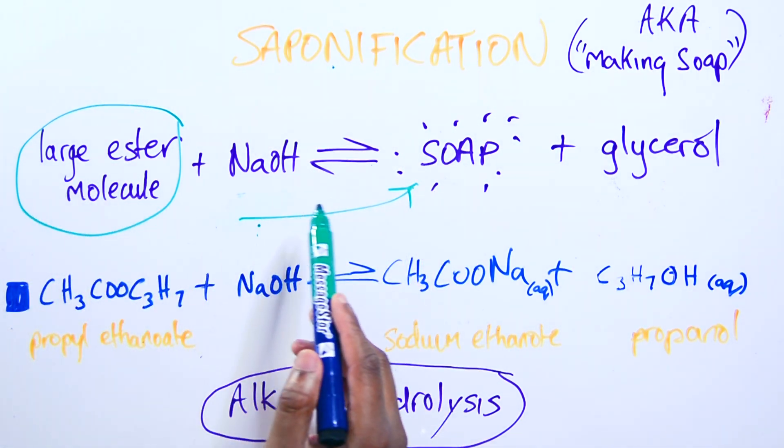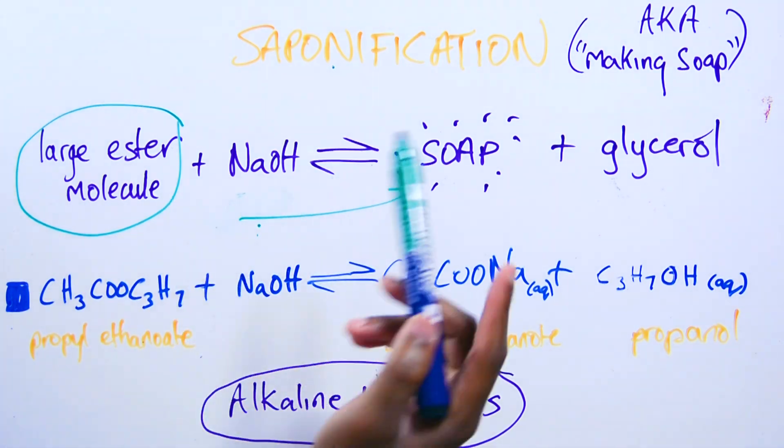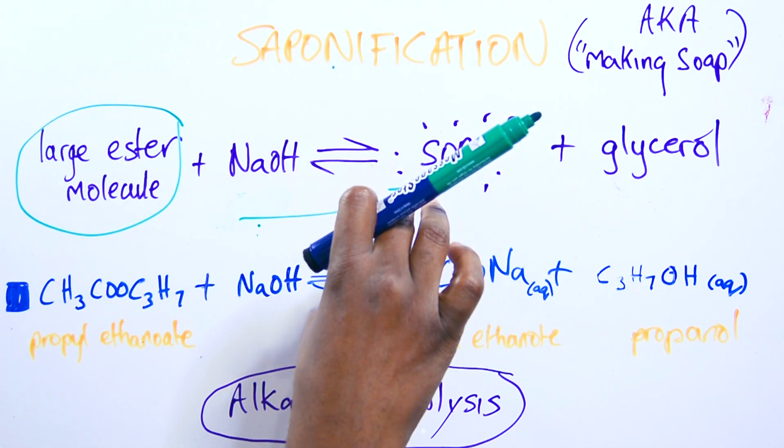So we're going to get a salt of the acid that made this ester. So it's going to be a long chain and then sodium at the end. That is what makes a soap.